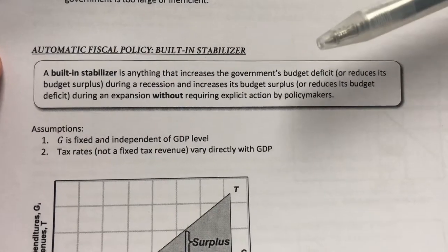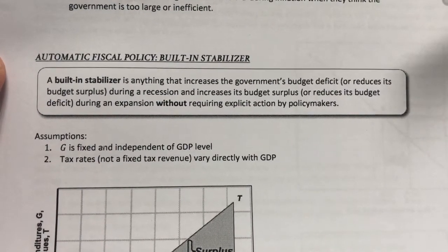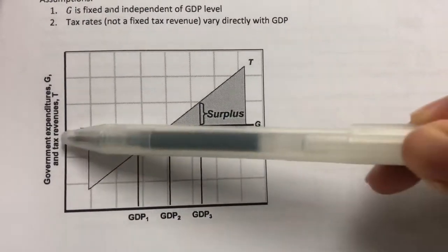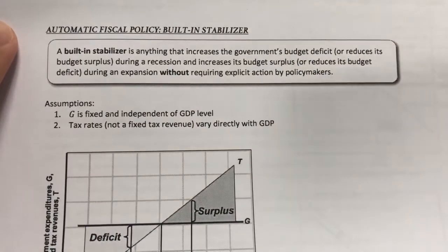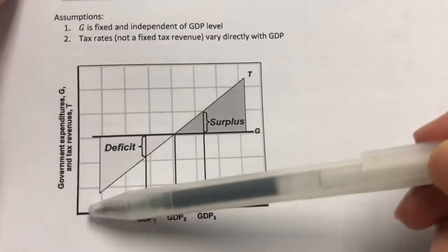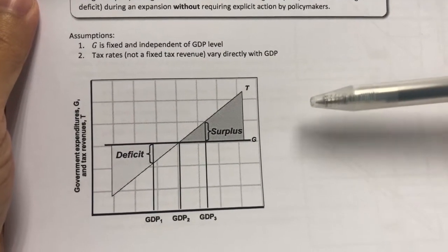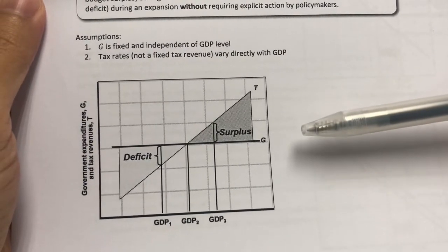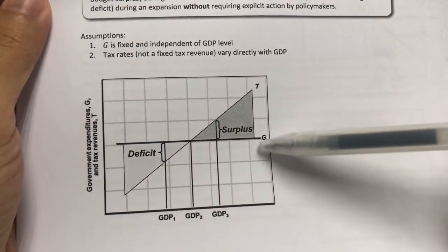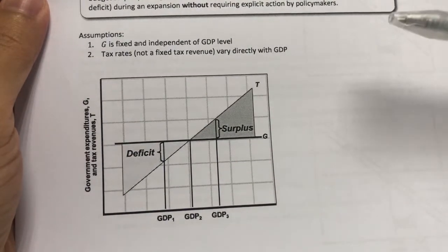The first assumption is that government spending is fixed and independent of the GDP level, so the G-schedule is a straight line. Secondly, we assume that tax rates vary directly with GDP, so the tax line is upward sloping. We've seen this diagram before when we studied the leakage and injection approach — here the injection focuses on G, and the leakage line focuses on T.